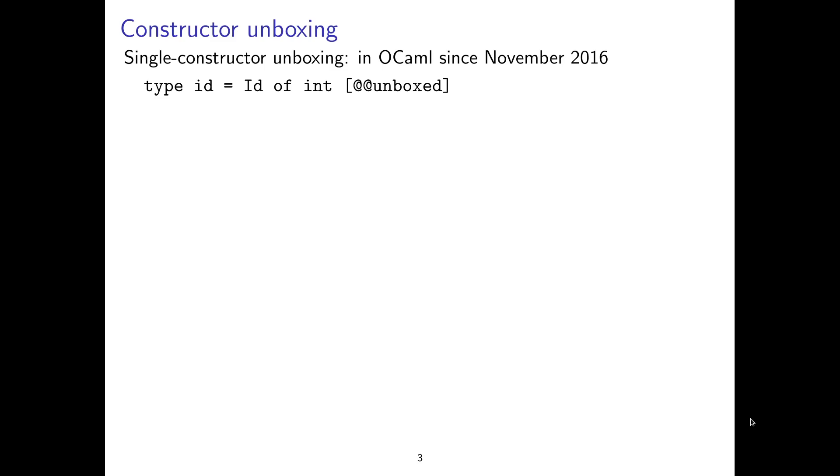So the feature is an extension of constructor unboxing. Since about five years ago, OCaml allows single constructor unboxing. So if you have an algebraic type with a single constructor and a single parameter, you can add this unboxed annotation to add that at runtime, the constructor is not used. It's compiled into the identity function. It's not represented, and this makes the representation similar to a type alias or synonym. But the type is incompatible. You have to explicitly use the constructor.